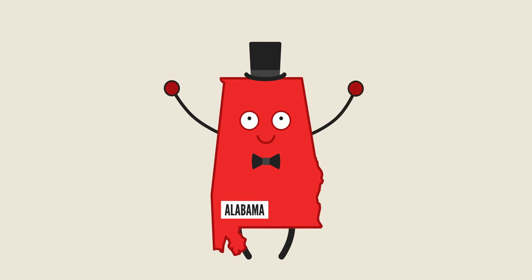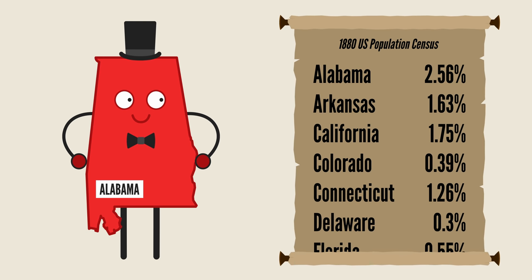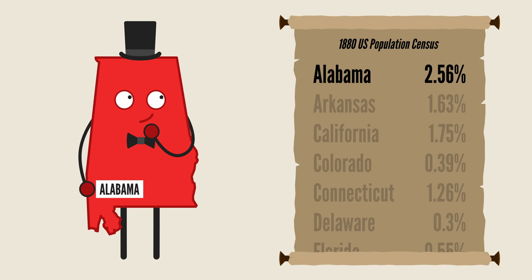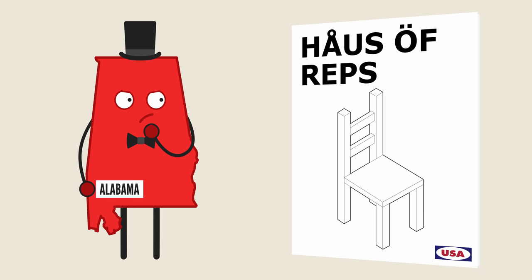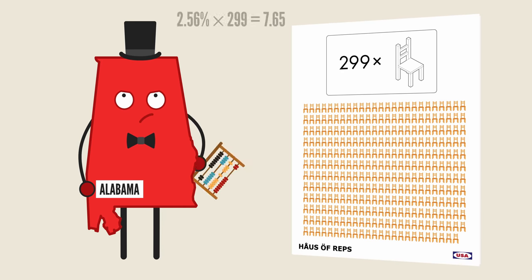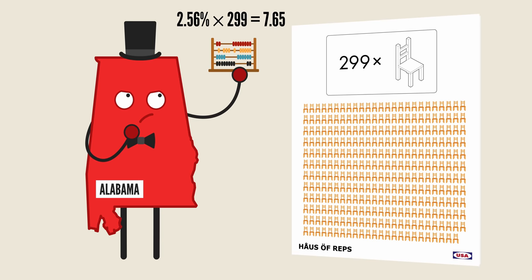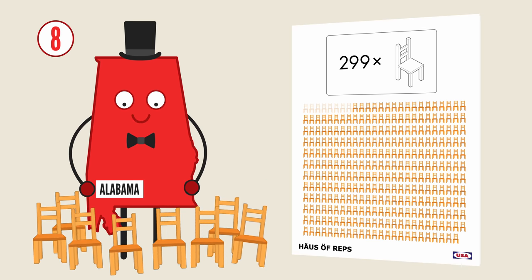Imagine it's the 1880s and you're the state of Alabama. In the recent 1880 census, it was determined that you had 2.56% of the population counted, so you're feeling pretty good. That population is handy because in the US House of Representatives, the number of seats you get is proportional to the percentage of the population counted. So hypothetically, if there were 299 seats up for grabs, Alabama should get 2.56% of those, which is 7.65 seats — a fraction of a seat. So Alabama gets eight members of the House of Reps.